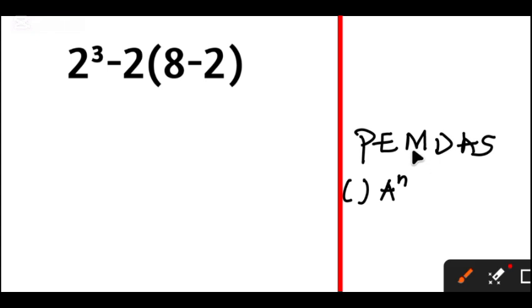After that, M and D stand for multiplication and division - you do them from left to right. Finally, A and S stand for addition and subtraction - you do them from left to right.